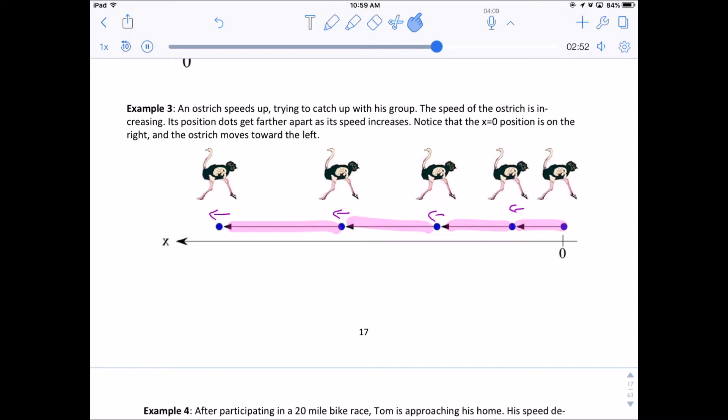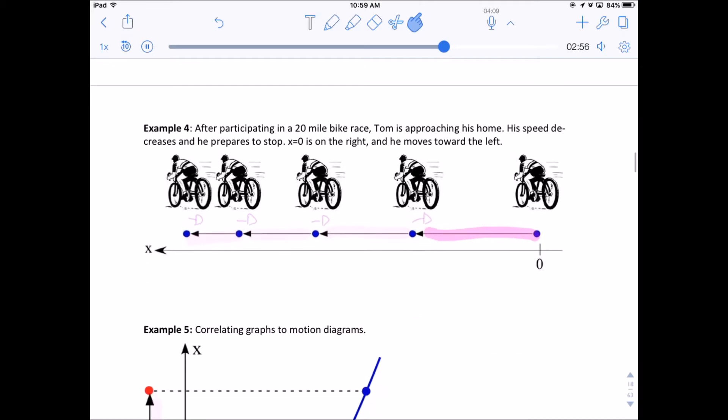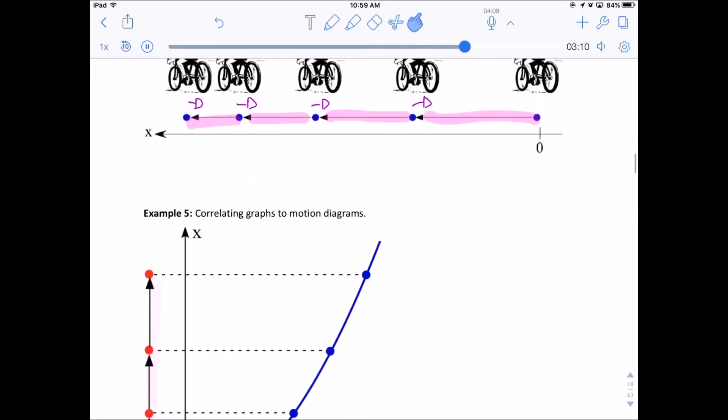And here we have a bicycle, now this one's going in the negative direction, but you'll see that its arrows get shorter and shorter, and so this one is slowing down. So my little acceleration arrows point the other direction because we're subtracting from that. Again, we'll draw the acceleration arrows later.